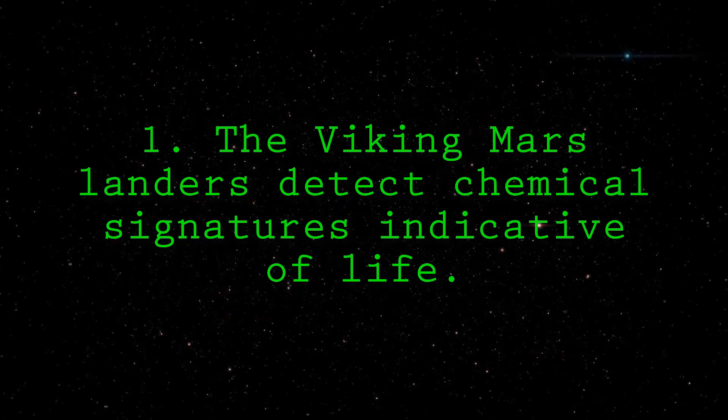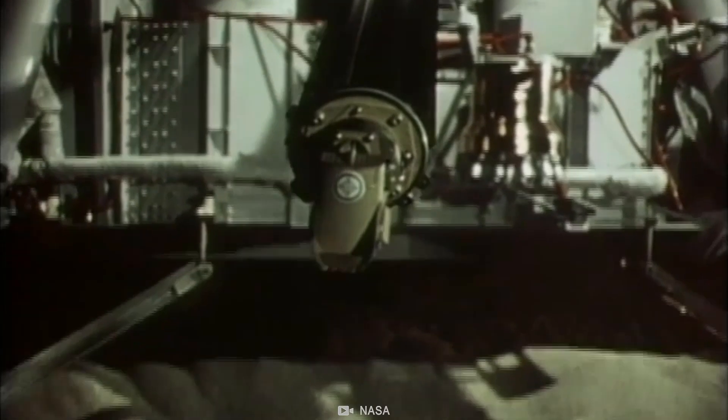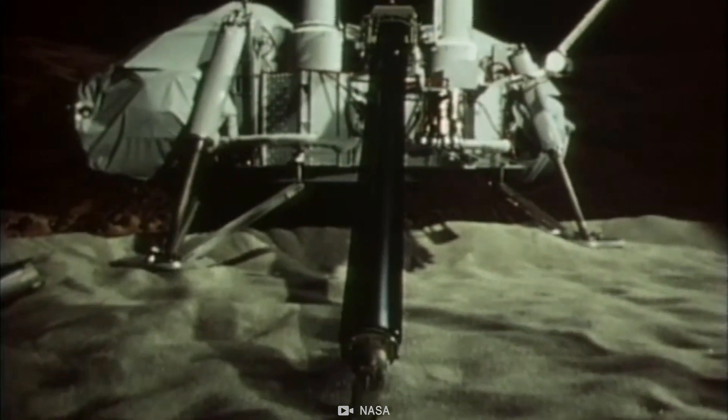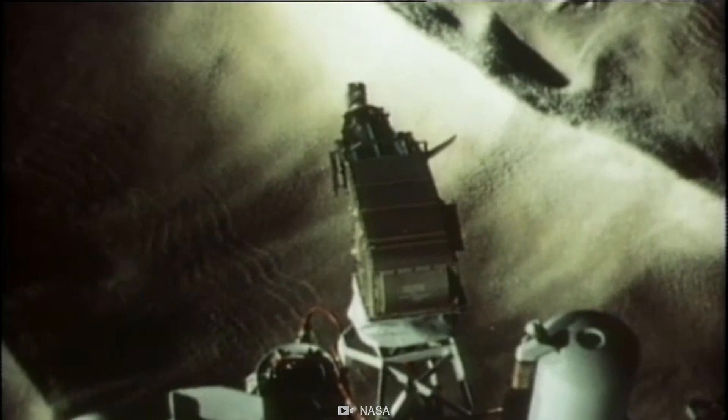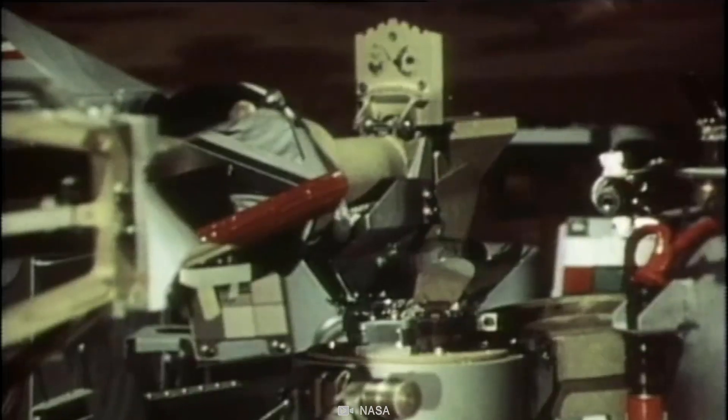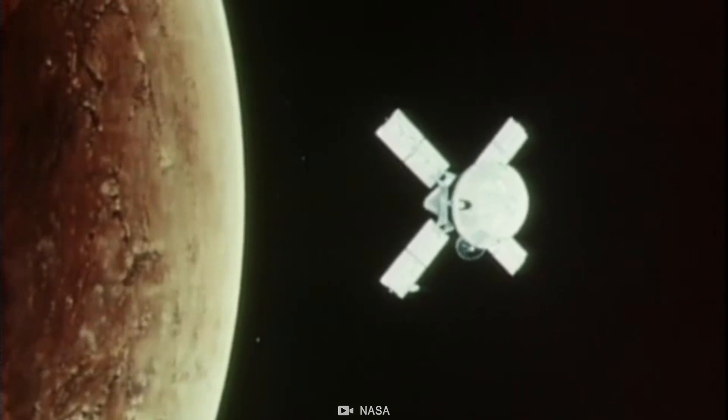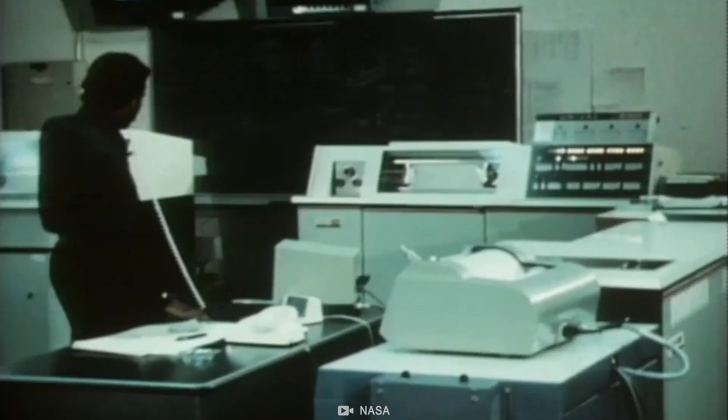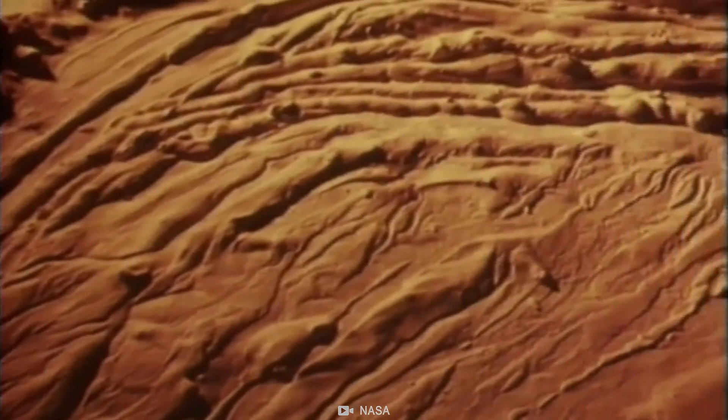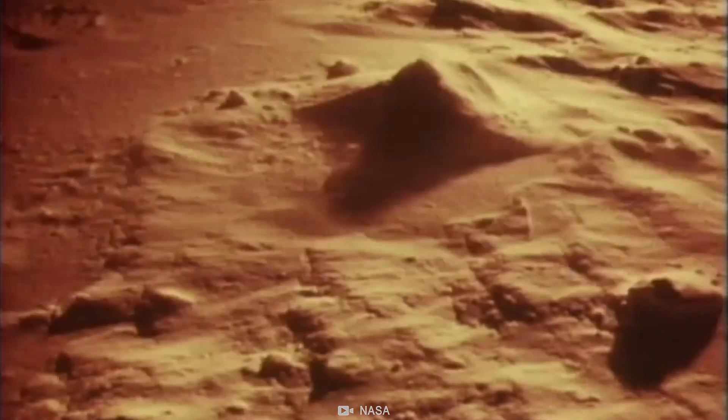Number 1. The Viking Mars landers detect chemical signatures indicative of life. Tests performed on Martian soil samples by NASA's Viking landers hinted at chemical evidence of life. One experiment mixed soil with radioactive carbon-labeled nutrients and then tested for the production of radioactive methane gas. The test reported a positive result. The production of radioactive methane suggested that something in the soil was metabolizing the nutrients and producing radioactive gas. But other experiments on board failed to find any evidence of life, so NASA declared the result a false positive. Despite that, one of the original scientists and others who have since re-analyzed the data still stand by the finding. They argue that the other experiments on board were ill-equipped to search for evidence of the organic molecules, a key indicator of life.